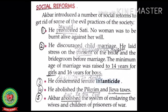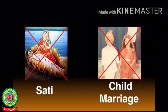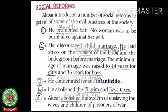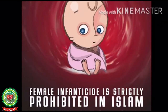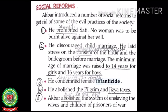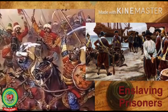Akbar introduced a number of social reforms to rid society of evil practices. Number one: he prohibited sati — no woman was to be burned alive against her will. Number two: he discouraged child marriage and laid stress on the consent of both the bride and bridegroom before marriage. The minimum age of marriage was raised to 14 years for girls and 16 years for boys. Number three: he condemned — meaning criticized — female infanticide, the killing of an infant less than one year of age. Number four: he abolished the pilgrim tax and jizya. Number five: Akbar abolished the system of enslaving the wives and children of prisoners of war.